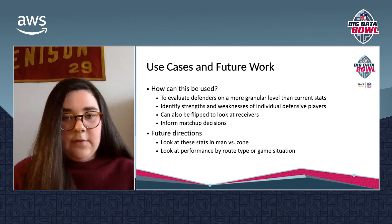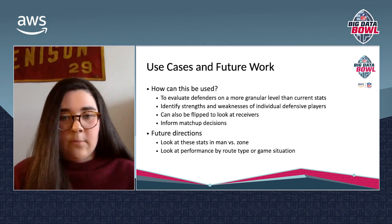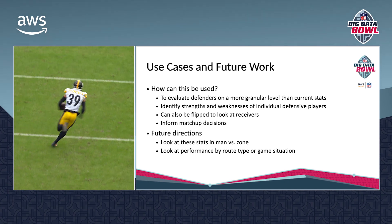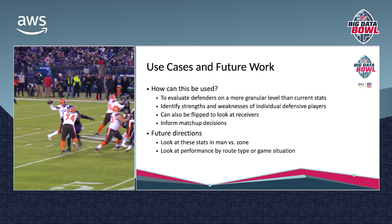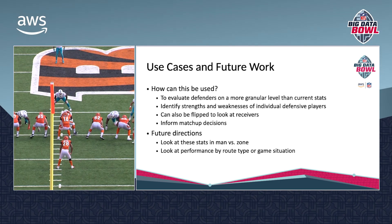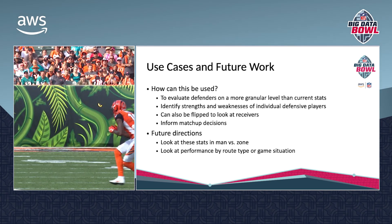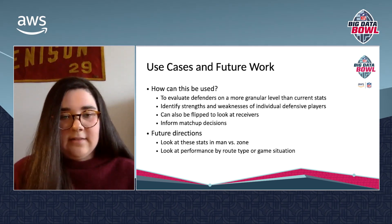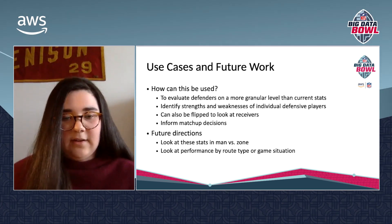Finally, some use cases and future work. This analysis can be used to evaluate defenders on a more granular level than currently available, to identify weaknesses and strengths of individual defensive players, and it could also be flipped to look at receivers — seeing where receivers are strong or weak in each stage of the pass. On that same note, it can inform matchup decisions: if receiver X is really good at increasing his target probability, you'd want a DB who's good at suppressing target probability. Future directions include looking at these stats in man and zone coverage, and also performance by route type or game situation. Thank you.